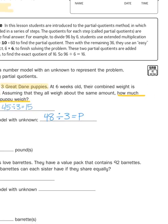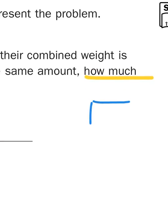Here's where I use the partial quotients strategy. I'm going to create a traditional long division bracket — it's technically called a vinculum, but we just call it the house. I'm going to put my dividend, the number I want to divide, in the house, and then I'm going to put the divisor, the number of groups I want to make, outside the house. This is where I start to use my multiplication facts to help me divide this number into three groups.